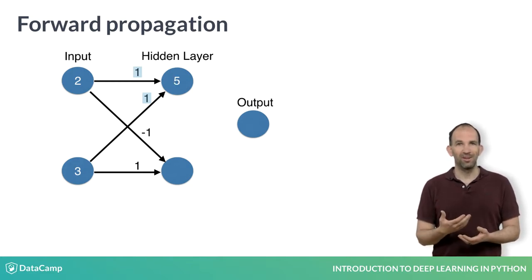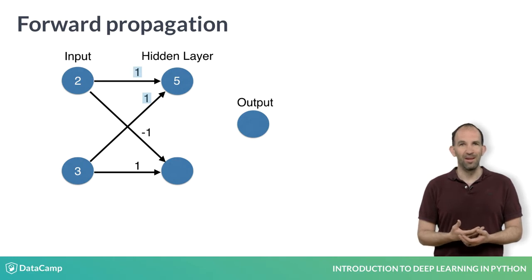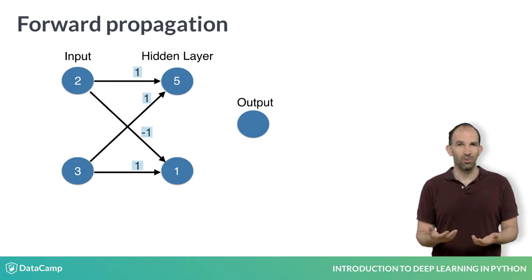Now we do the same to fill in the value of this node on the bottom. That is 2 times minus 1 plus 3 times 1. That's 1.